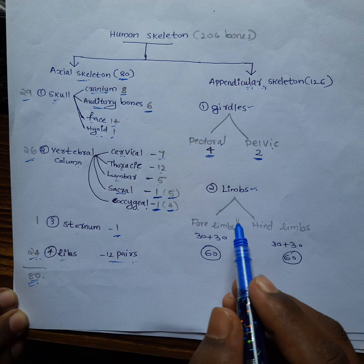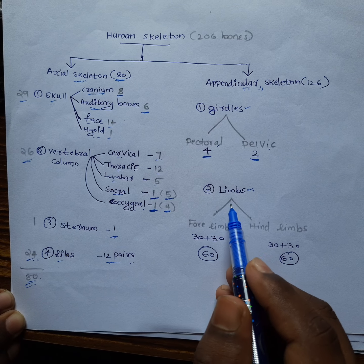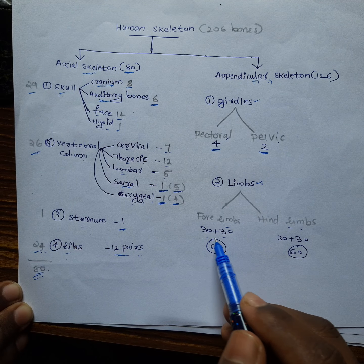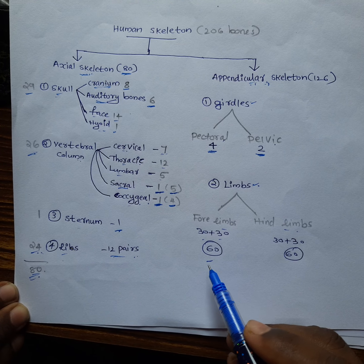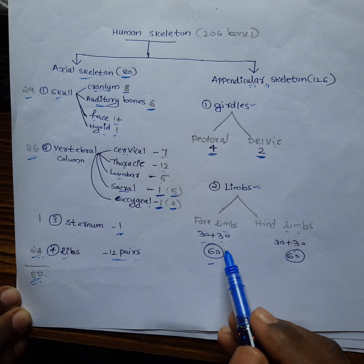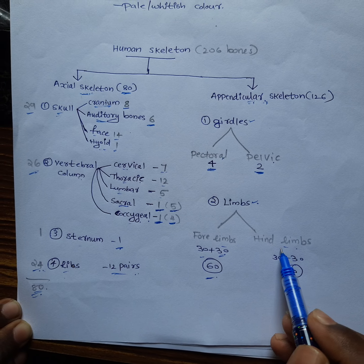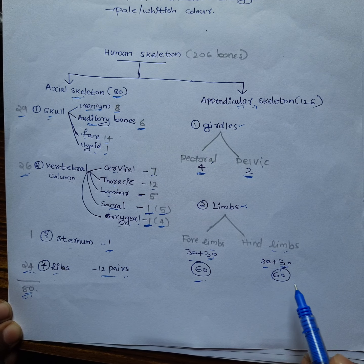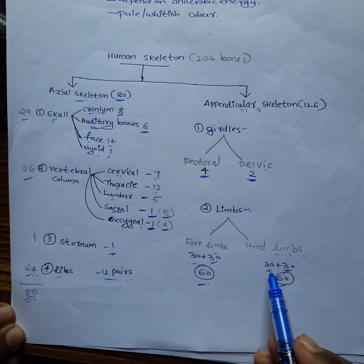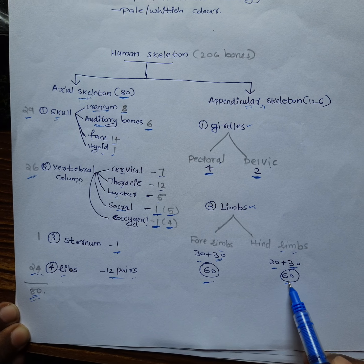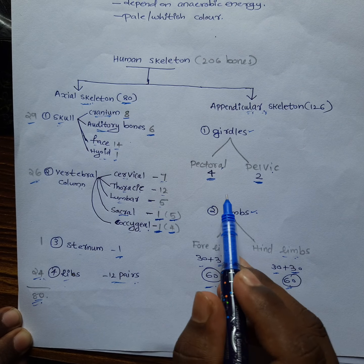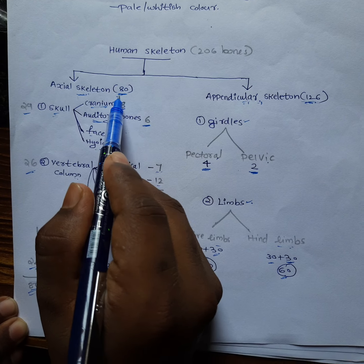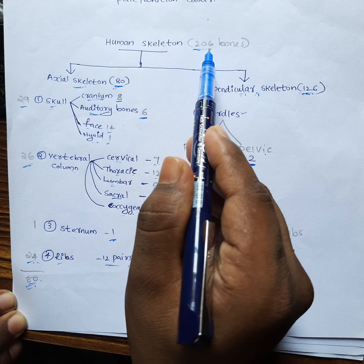Next, I'm taking the limbs — forelimbs and hind limbs. In forelimbs there will be 30 plus 30, total 60 bones, meaning one hand has 30 and the other hand has 30. In hind limbs, one leg will have 30 and the other leg another 30, so total 60. So calculating: 60 plus 60 equals 120, and 120 plus 6 equals 126. So 126 plus the axial skeleton's 80 will equal 206 bones.